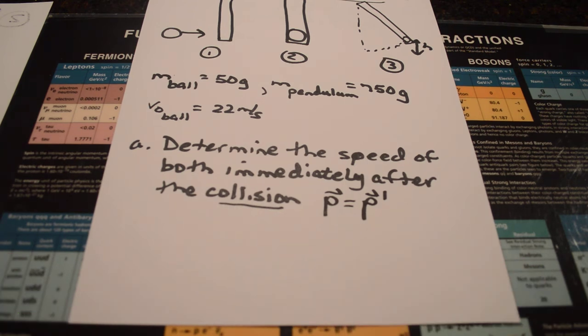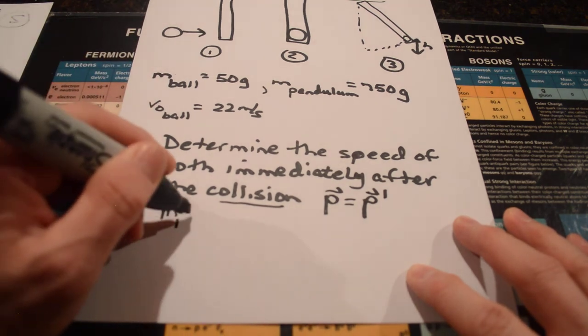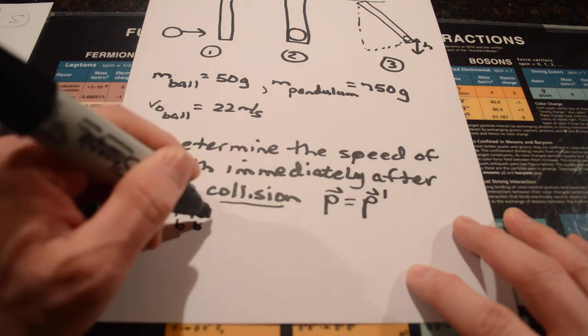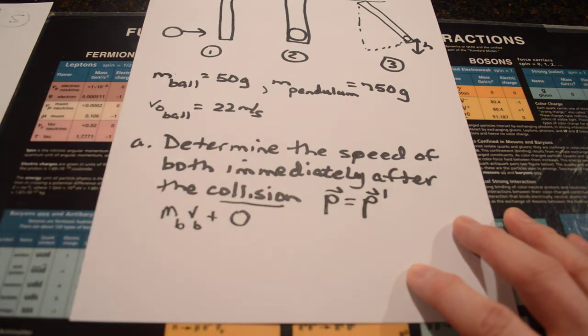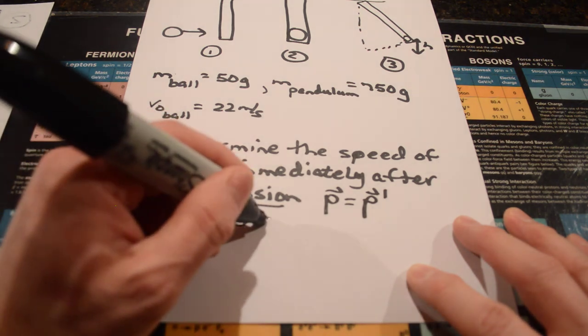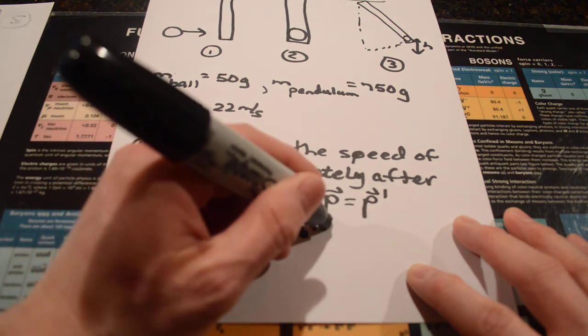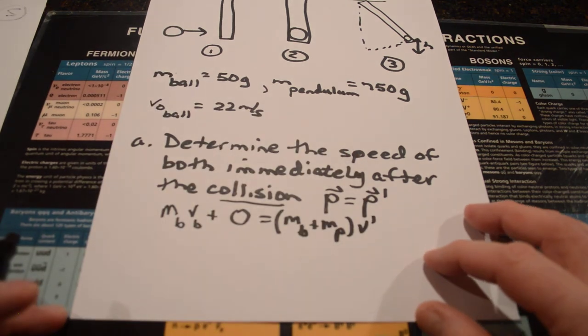The total momentum, p equals the total momentum afterwards, p prime. So, p equals p prime. That would be the momentum of the ball plus the momentum of the pendulum. So, that's the mass of the ball times the velocity of the ball. Plus, wouldn't that be okay to say that the pendulum is not moving? Then afterwards, that's going to be the mass of the ball plus the mass of the pendulum times the new velocity, v prime.